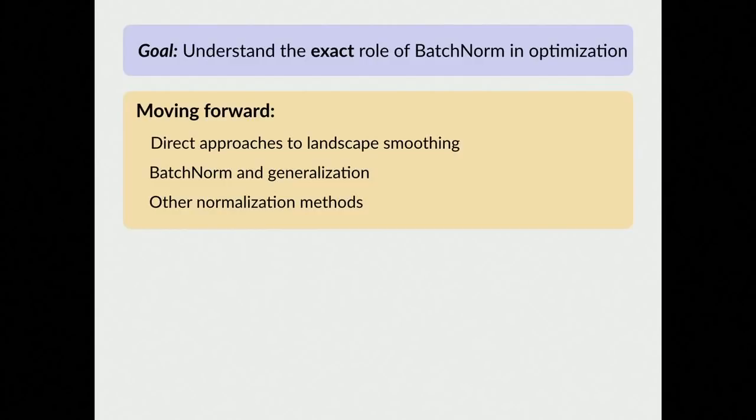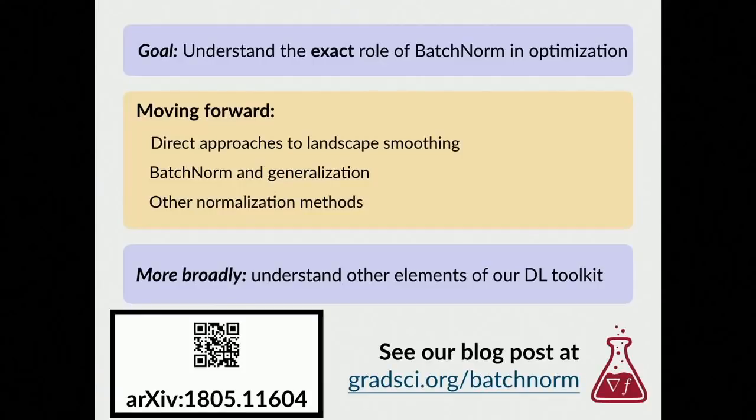Moving forward, there are many future directions. We don't claim to have fully explained the deep learning toolkit or even fully explained batch norm. Questions remain: can we exploit what we found and design methods that make optimization nicer directly, rather than methods designed to address distributional instability that happen to make optimization nicer? Can we pin down the relationship between batch normalization and generalization? There's also the question of why different subfields prefer different normalization methods, and there's no analysis yet of how those different normalization methods work or what the relationships between them are. More broadly, understanding all the components of the deep learning toolbox remains an important goal. We have a blog post and an arXiv paper available.